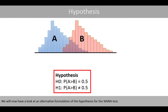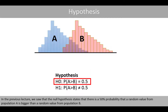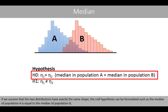We will now have a look at the null hypothesis formulation for the Wilcoxon-Mann-Whitney test. In the previous lecture, we saw that the null hypothesis states that there is a 50% probability that a random value from population A is bigger than a random value from population B. If we assume that the two distributions have exactly the same shape, the null hypothesis can be formulated as: the median of population A is equal to the median of population B.